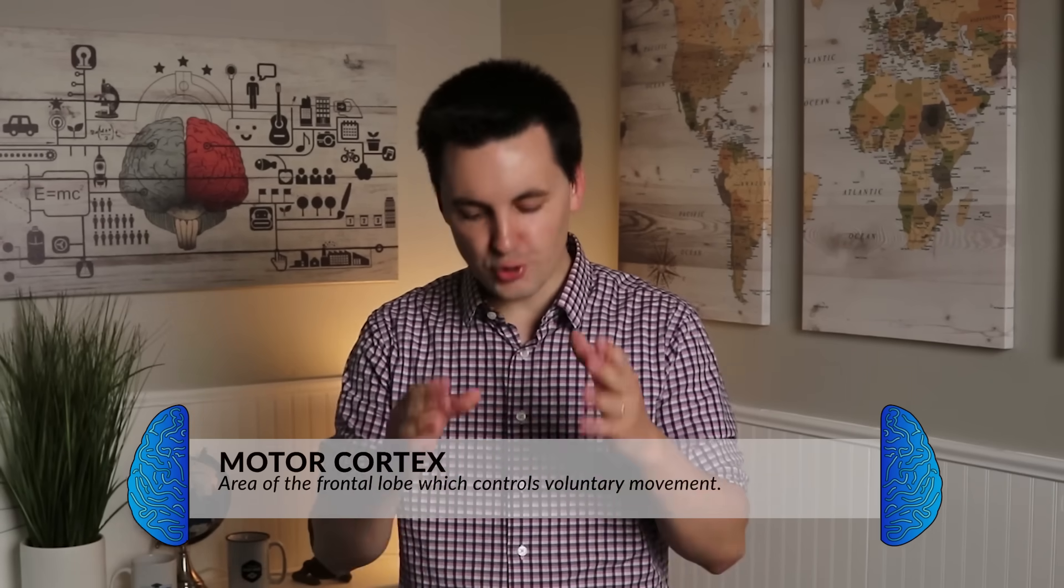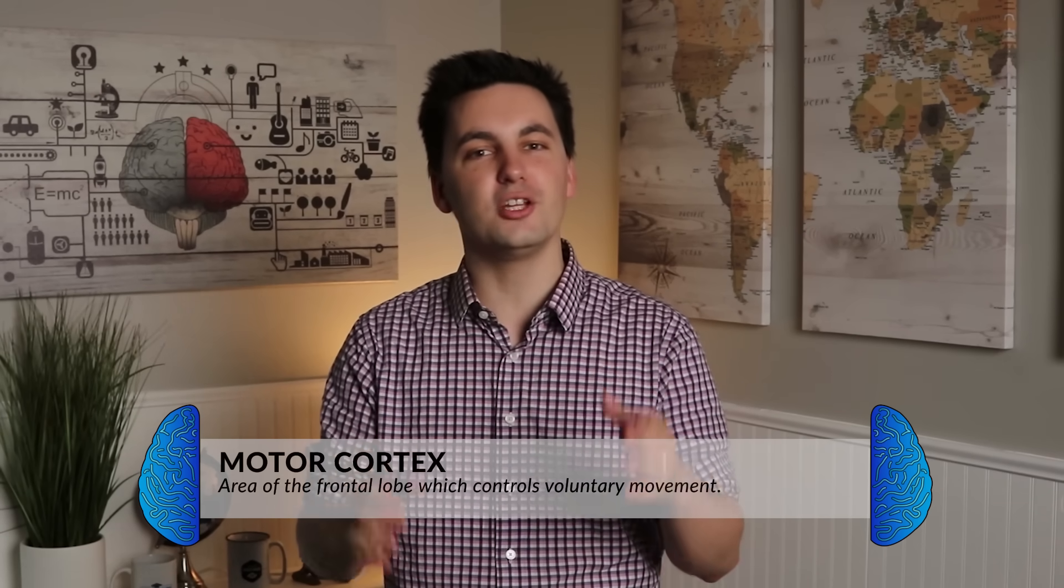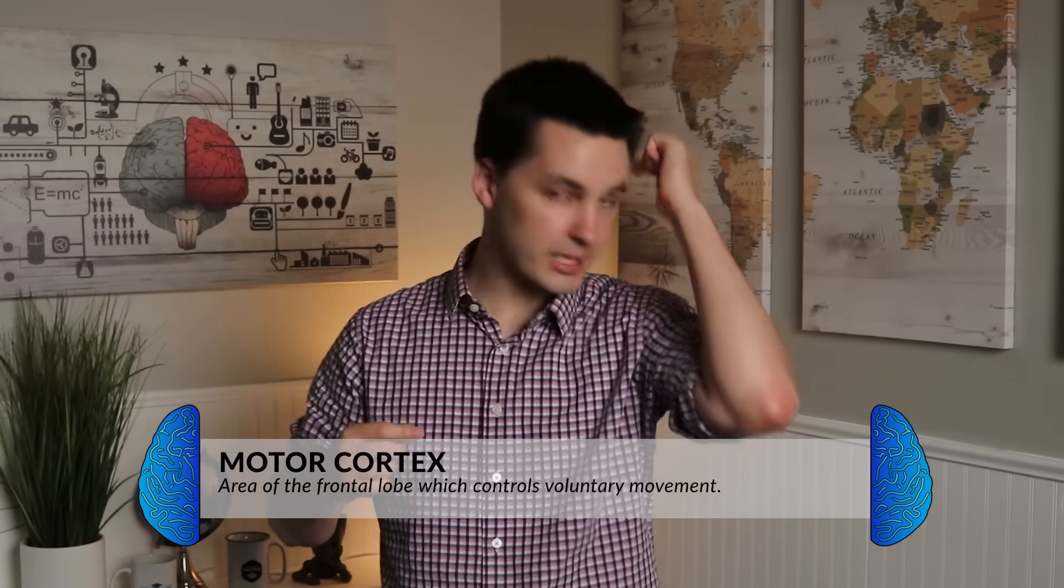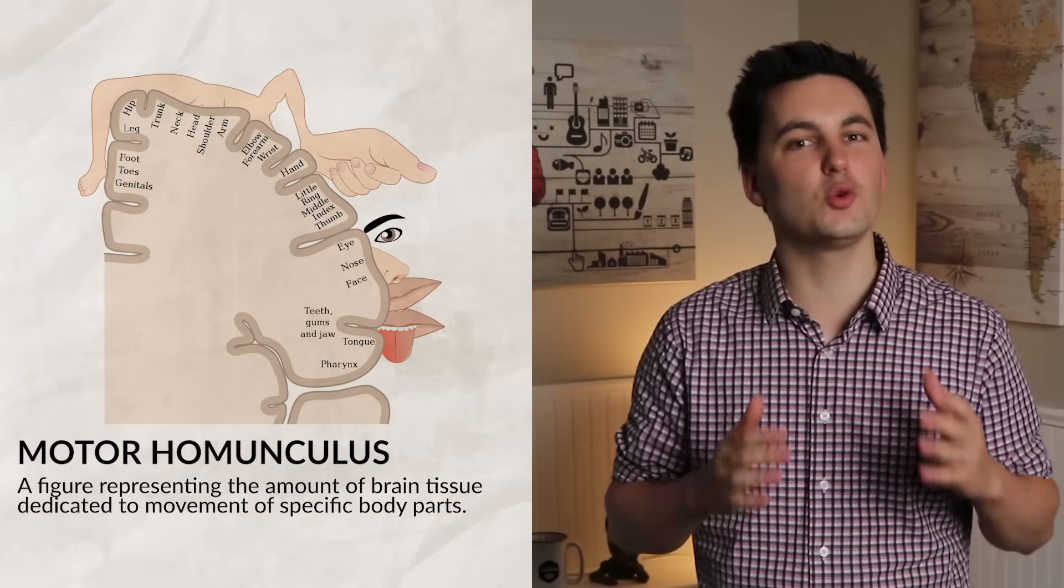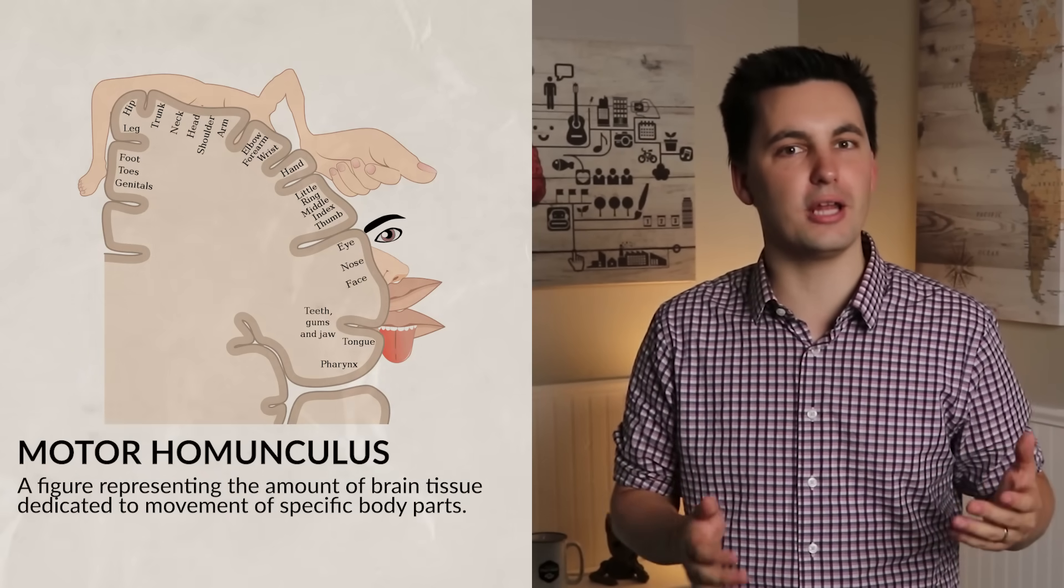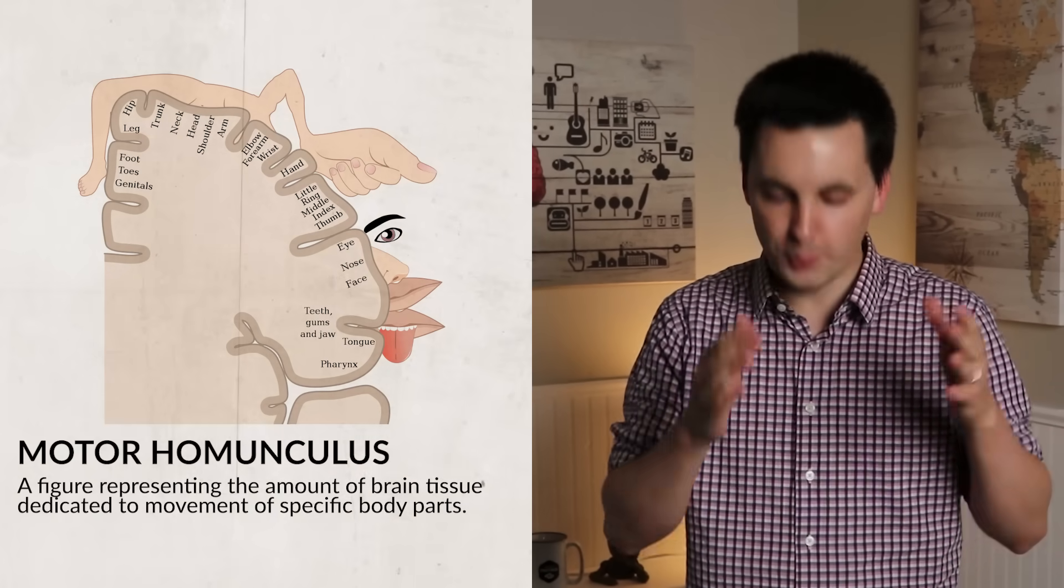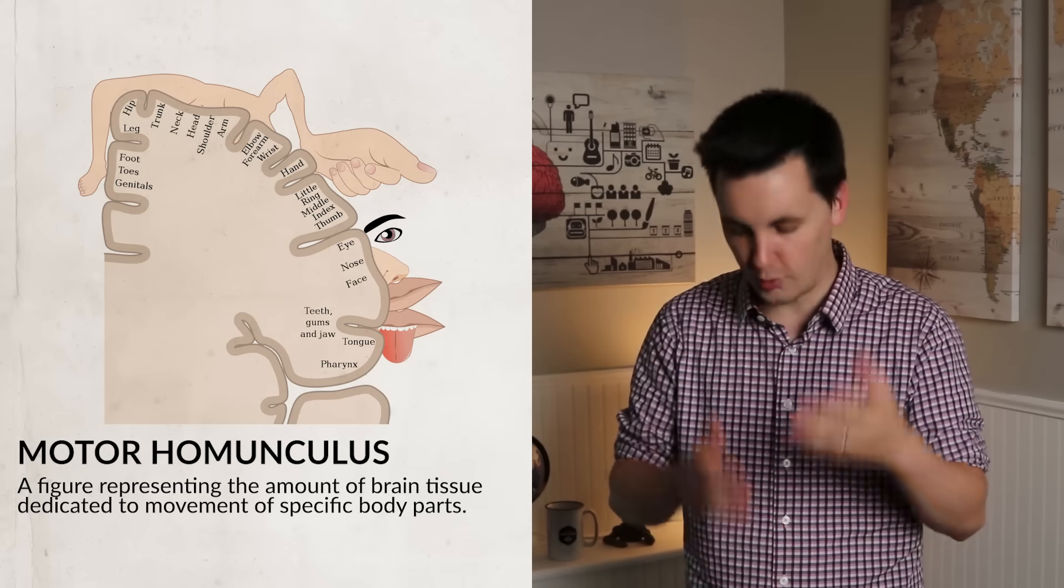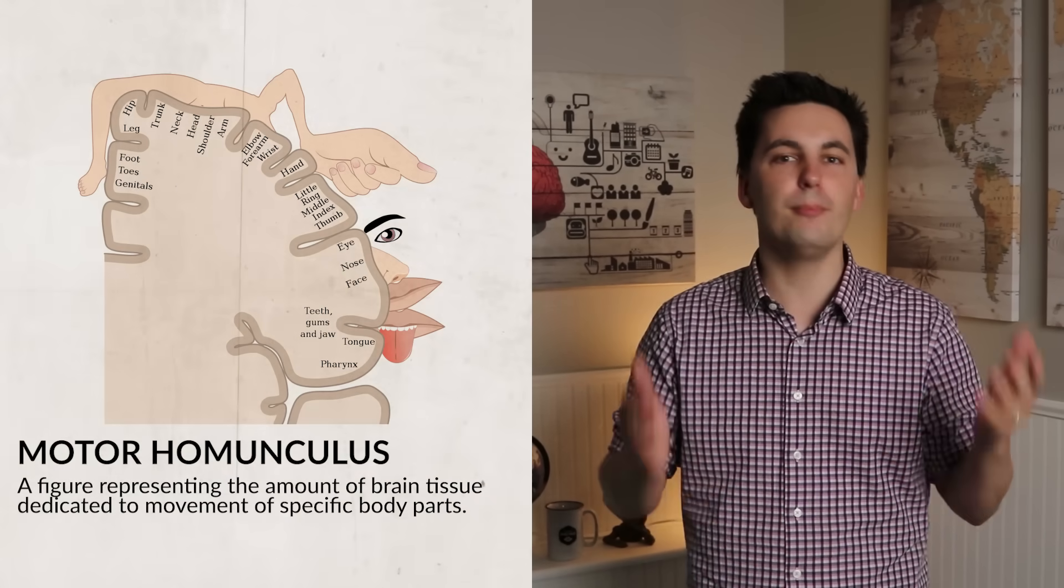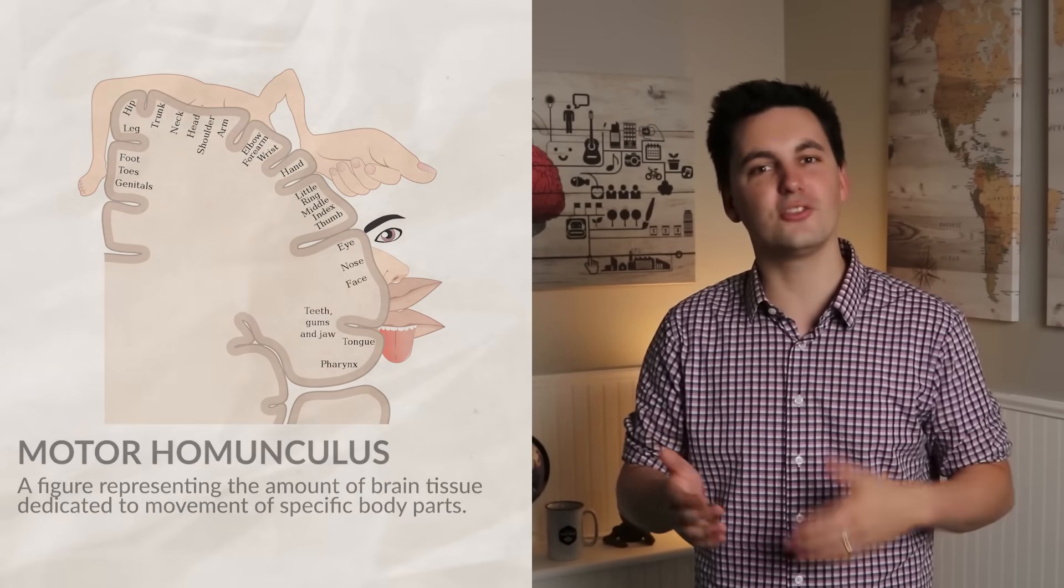The second is the motor cortex, which allows you to have voluntary movement, and is located in the back of the frontal lobe and runs from ear to ear. It's kind of like an arch. The left motor cortex controls movement on the right side of your body, and the right motor cortex controls movement on the left side of your body. The motor cortex is represented by a figure called the motor homunculus. This shows us a visual representation of the amount of brain area that's dedicated towards a specific body part. What we understand from this visual representation is that more brain tissue is devoted to the body parts that are the most controlled by us, like our hands and our mouth.